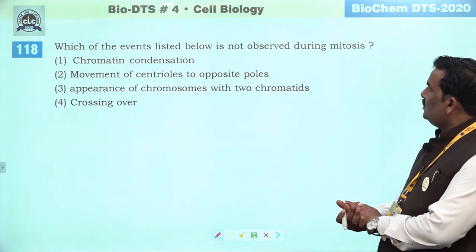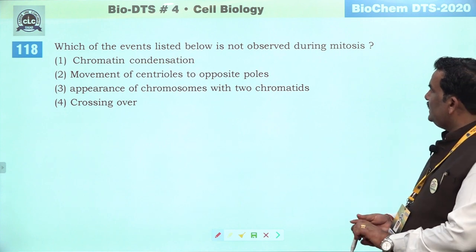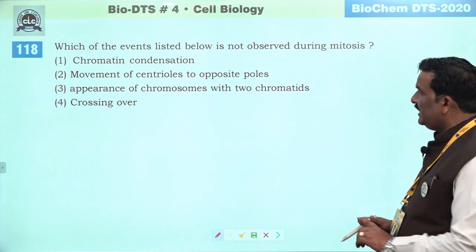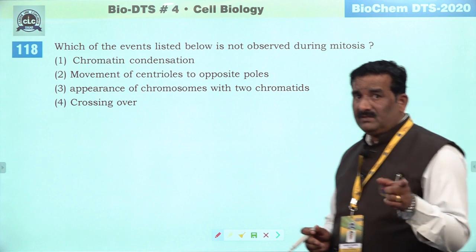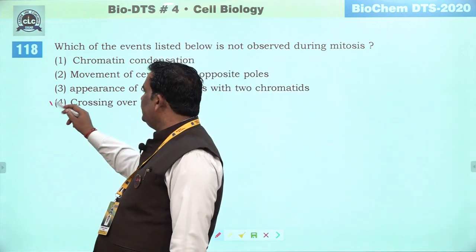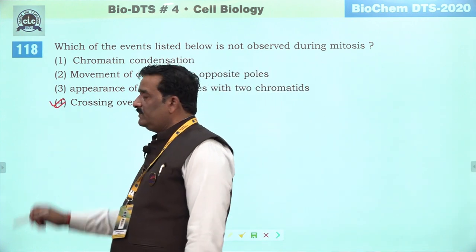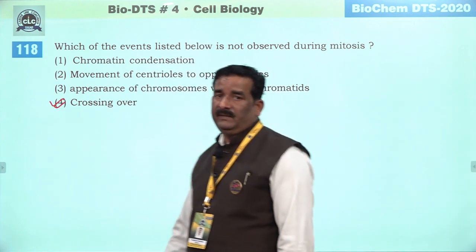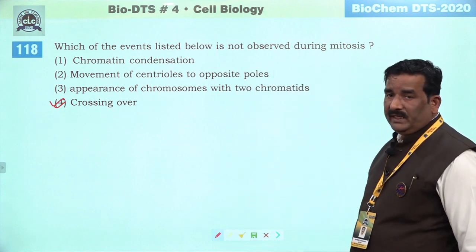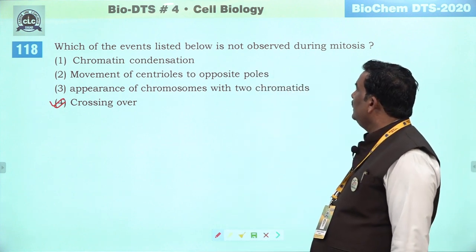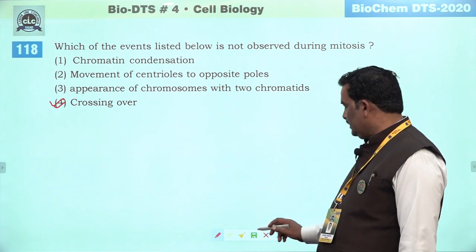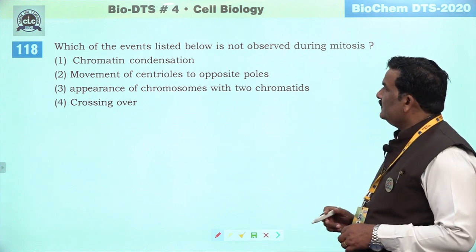Next question: which of the events listed below is not observed during mitosis. Mitosis mein kabhi bhi crossing over nahi milti hai, kyunki yahan par similar features pass out hote hain daughter cells mein — yeh variability show nahi karti. Isliye crossing over event hume nahi milegi.